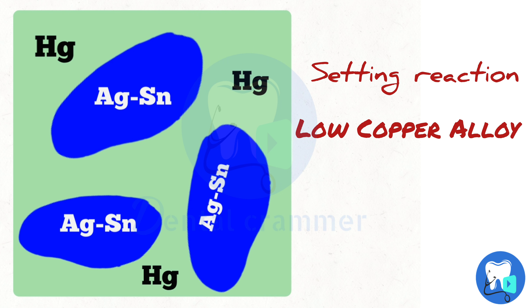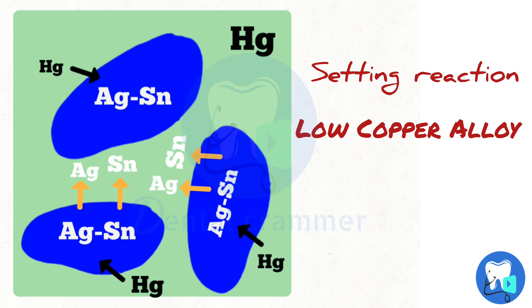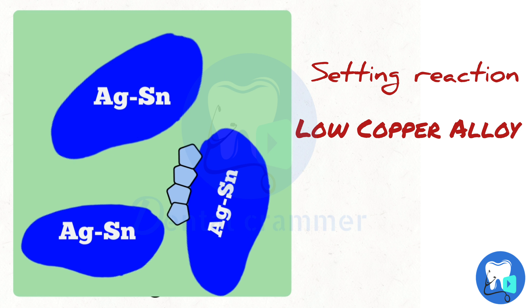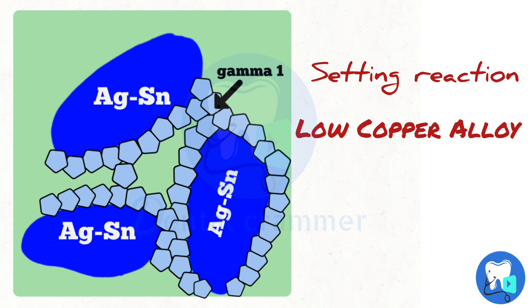Here is the animation showing the setting reaction of low copper amalgam alloys. In the picture, the dark blue is the silver tin alloy and the green one is mercury. As the reaction occurs between silver tin and mercury, crystals start precipitating out in the form of phases. Gamma 1 phase is the first to precipitate out, because the solubility of silver in mercury is less compared to tin. Then gamma 2 phase is formed.